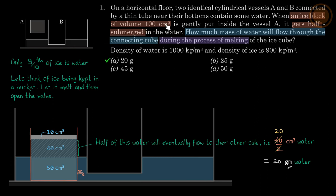There is an ice block in a 100 cm³ cube. It was put on the vessel, so it got half submerged. Then how much mass of water will flow through the connecting tube during the process of melting?